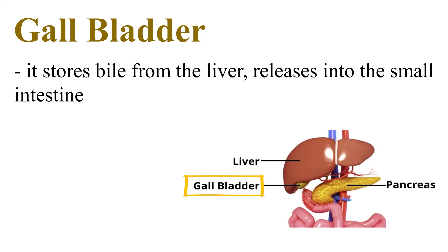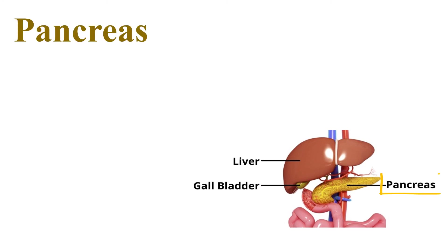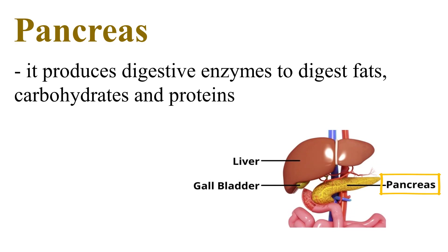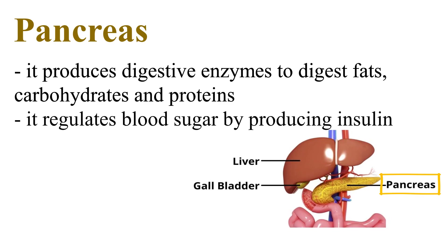The Gallbladder stores bile from the liver and releases it into the small intestine. The Pancreas produces digestive enzymes to digest fats, carbohydrates, and proteins. It also regulates blood sugar by producing insulin.